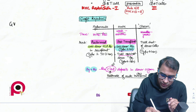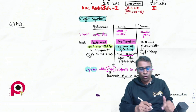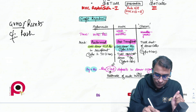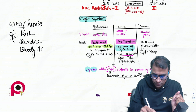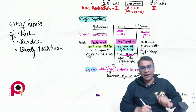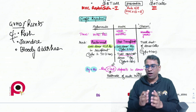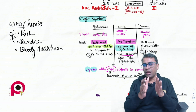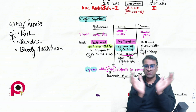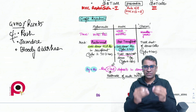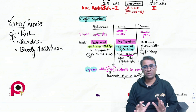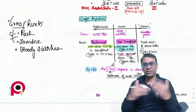GVHD (also called Runt's disease) presents with three main findings: rash, jaundice, and bloody diarrhea. If occurring within 100 days, it is acute GVHD; after 100 days, it is chronic GVHD. The basic logic is immunocompetent donor cells destroying the immunosuppressed recipient. If the graft destroys the host, it's GVHD; if the host destroys the graft, it's graft rejection.